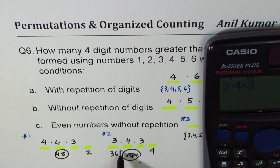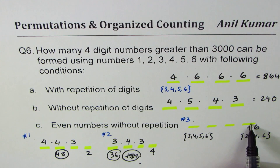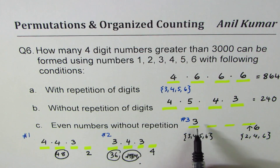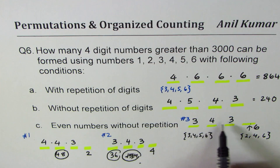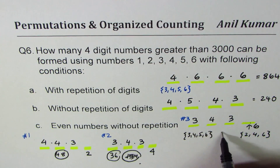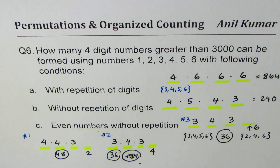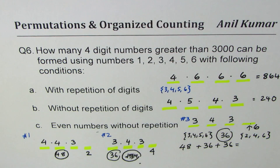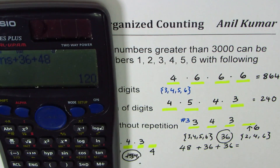Correcting: for case two, the answer is three times four times three equals 36. Case three: place six in the last digit. Six cannot go in the first position either, so again three choices for the thousands place, four for hundreds, and three for tens — giving three times four times three equals 36. So for even numbers without repetition greater than 3000: 48 plus 36 plus 36 equals 120.